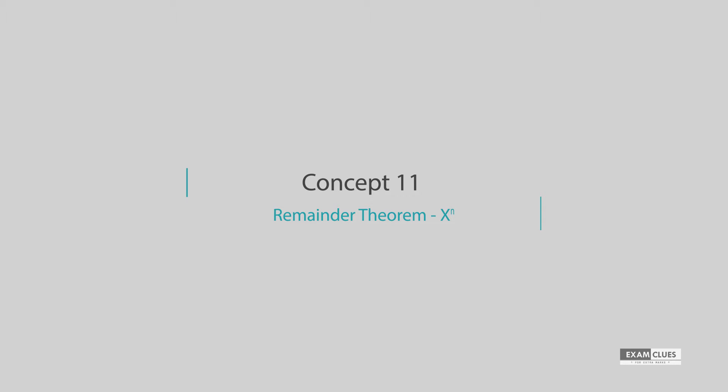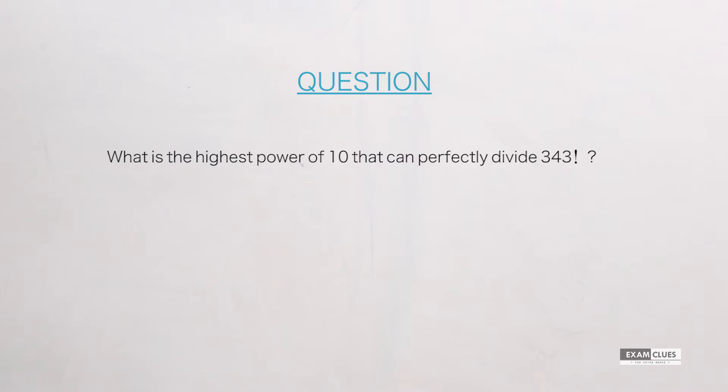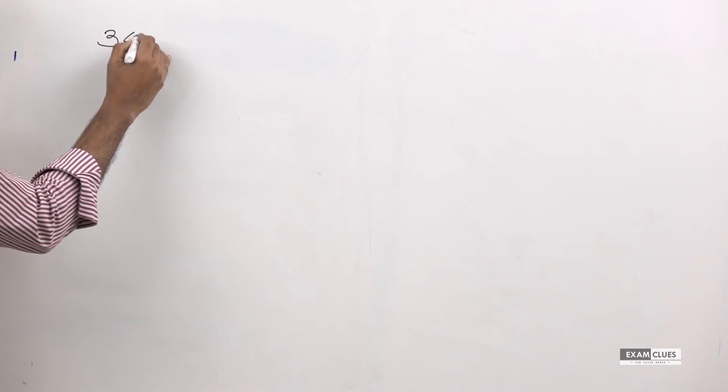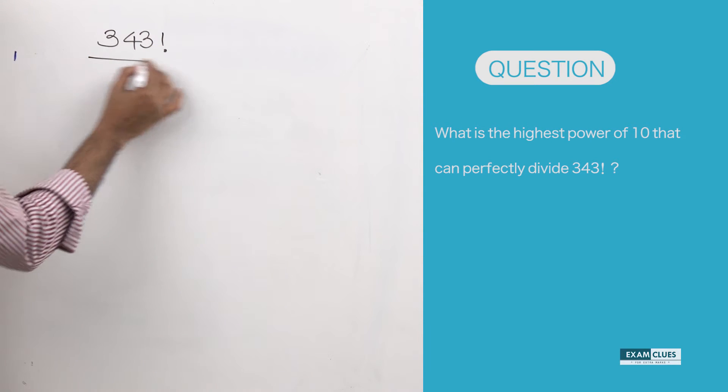Let's look at the question now. The question says: what is the highest power of 10 that can perfectly divide 343 factorial? I'm writing it here: 343 factorial. What is the highest power of 10 that can divide it?